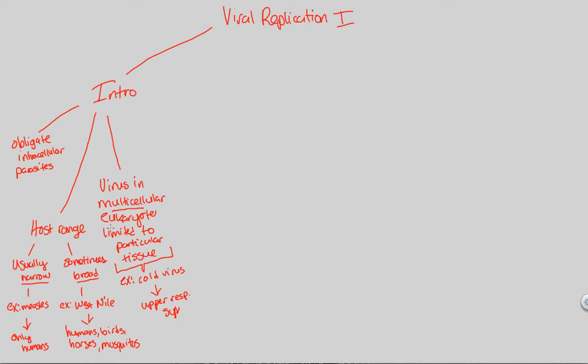So upper respiratory system tissues are going to be affected by this cold virus because this is a virus that infects a multicellular eukaryote, like the humans, and thus it is limited to a particular tissue. So we have this host range. We have this idea of multicellularity playing a role in what a virus can do in terms of its replication. Eventually, we're going to get to that.